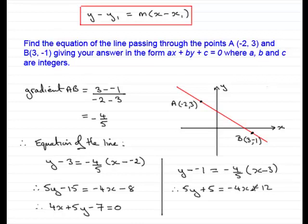And rearranging this, you can see that if I add 4x to both sides, I get 4x. And if I take the 12 from both sides, I'm going to have 5y and 5 - 12 is -7 equals 0.